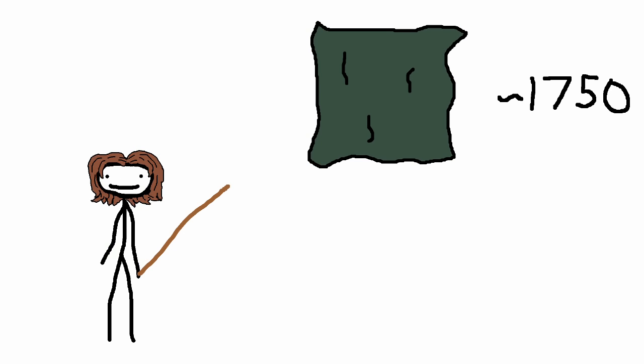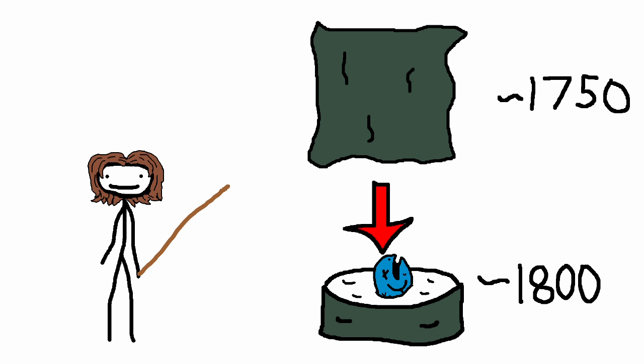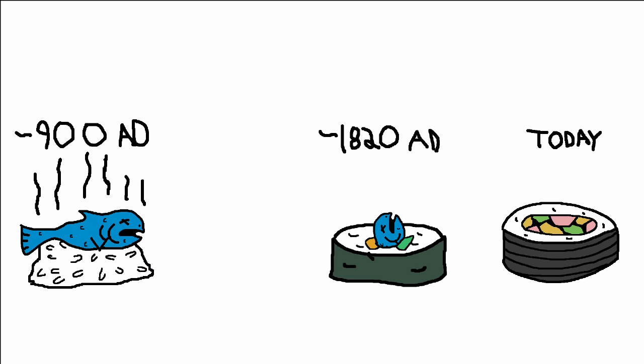Sheet seaweed was also invented around 1750, which allowed the contemporary sushi roll to take form around this time. Toss in a couple vegetables, and you've got something much more resemblant to today's sushi.